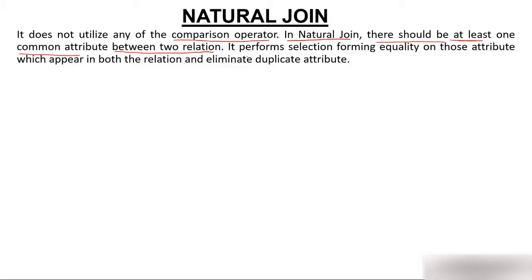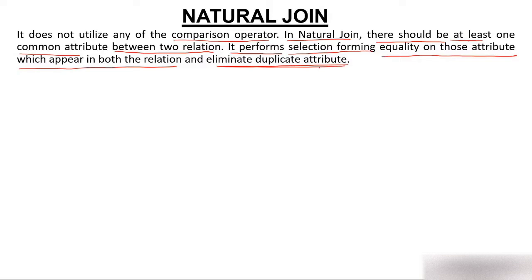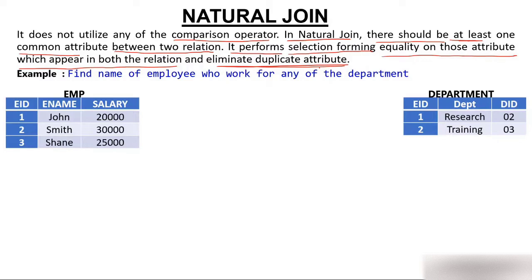If there is no common column, natural join will act as a cross join. Natural join performs selection by forming equality on the common attributes, selecting only rows that appear in both relations where the common attributes are equal. It also eliminates duplicate attributes — the common column appears only once, unlike in cross join where it appears in both tables.